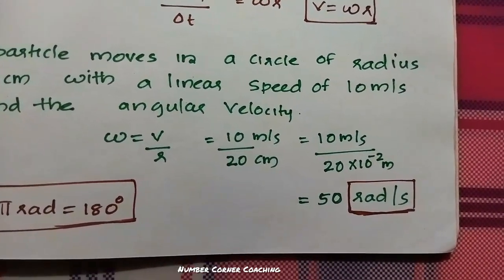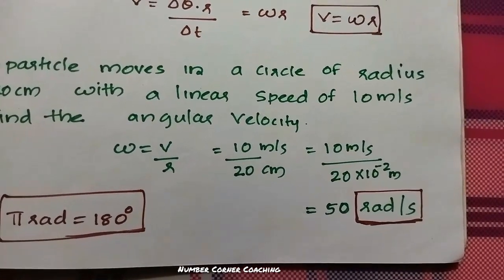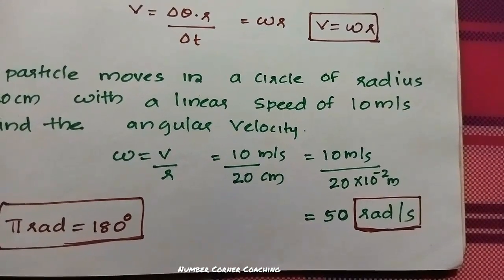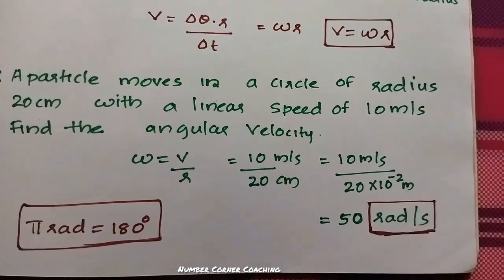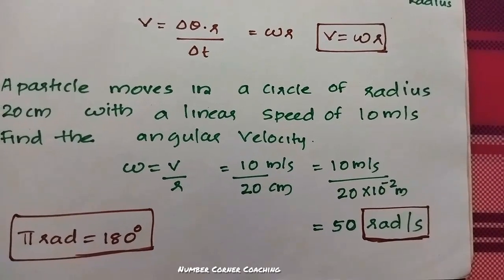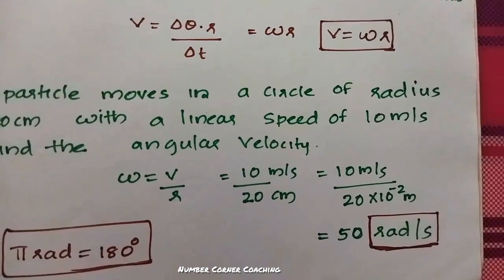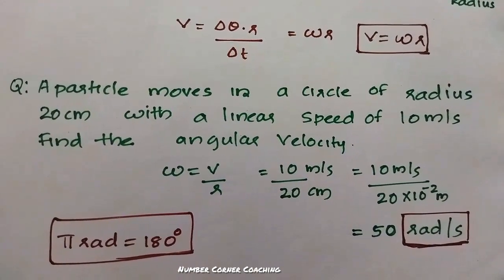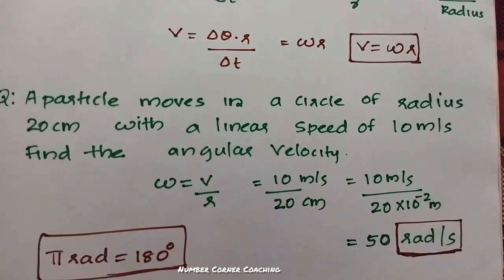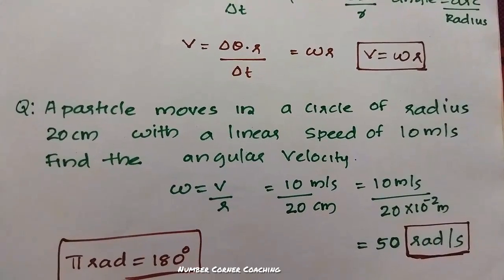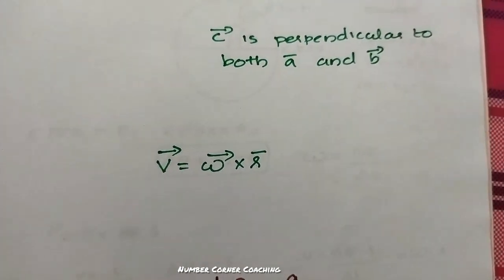So we are going to look at this. If you want to see it, the unit of angular velocity is radian per second, and we also have pi radian. Now let's take the relationship between angular velocity and linear velocity: v is equal to omega into r.